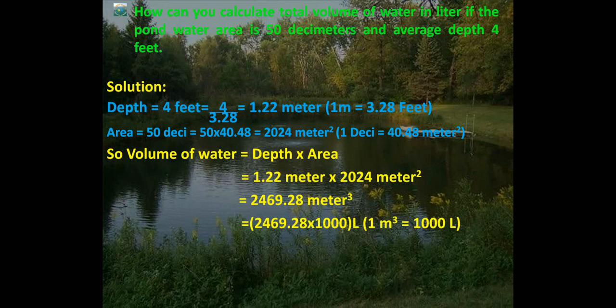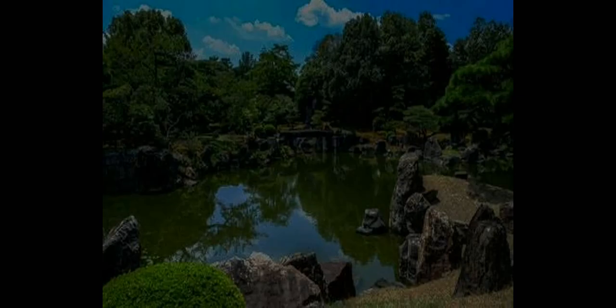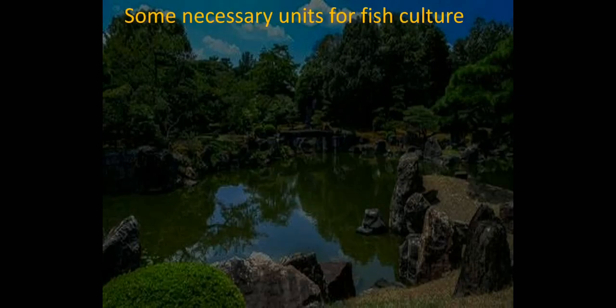Now converting cubic meters into liters: 2469.28 × 1000 = 2,469,280 liters. Some necessary units for fish culture: 1 ppt equals 1 gram per liter; 1 ppm equals 1 milligram per liter.